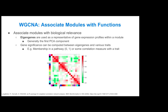WGCNA then associates each module with biological relevance by computing an eigengene — the representative of gene expression profiles within a module, generally the first PCA component. Gene significance can then be computed between these eigengenes and various traits. For example, membership in a pathway could be a binary vector, or you can compute a correlation metric with a quantitative trait for each gene in the eigengene vector. The heatmap shows the similarities between those modules as well.